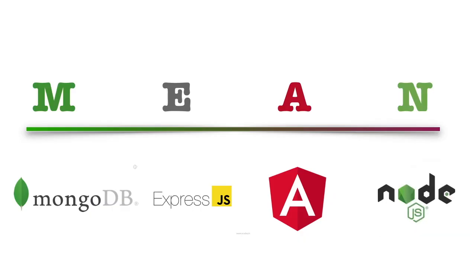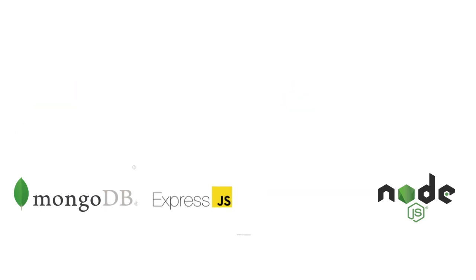You might have heard about the MEAN stack, which is MongoDB, ExpressJS, Angular, and NodeJS — whereas MongoDB acts as a database, ExpressJS as a backend framework, NodeJS as a backend server, and Angular as a SPA framework.